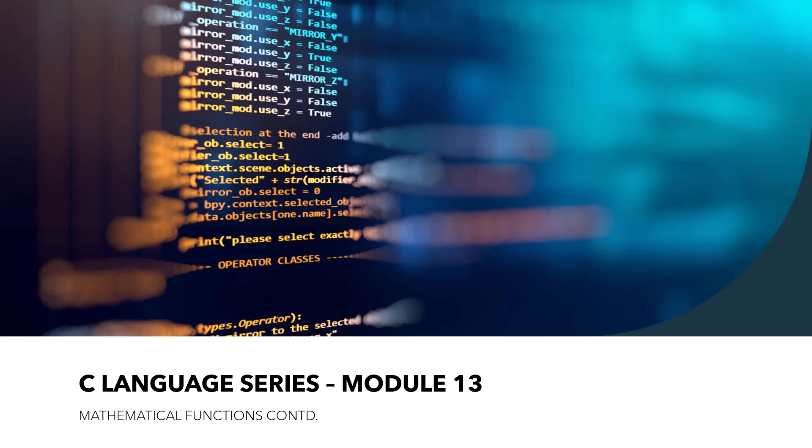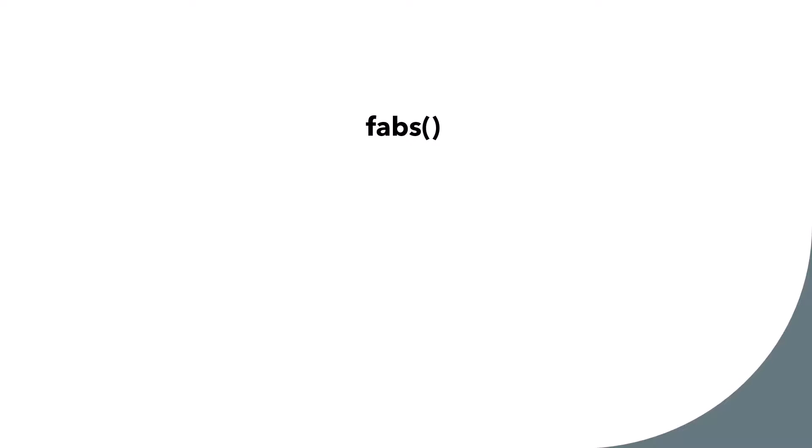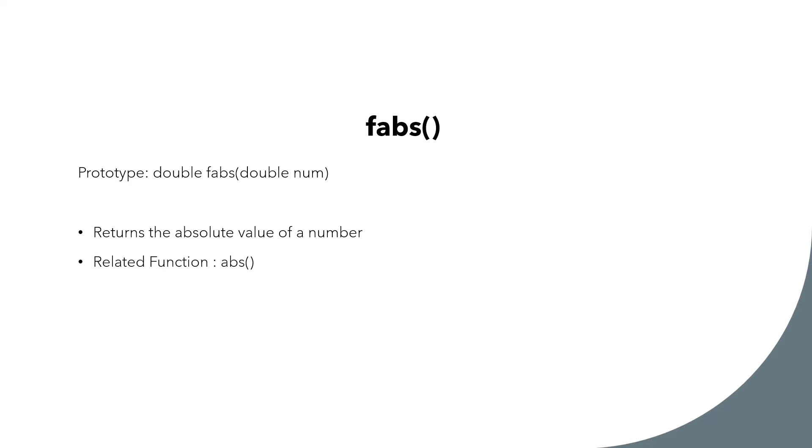Hello and welcome to the second session on mathematical functions. We're going to begin with the function fabs, and this function, as you can see from the prototype, returns a double and takes a double as argument. This function returns the absolute value of a number and is related to the function abs.